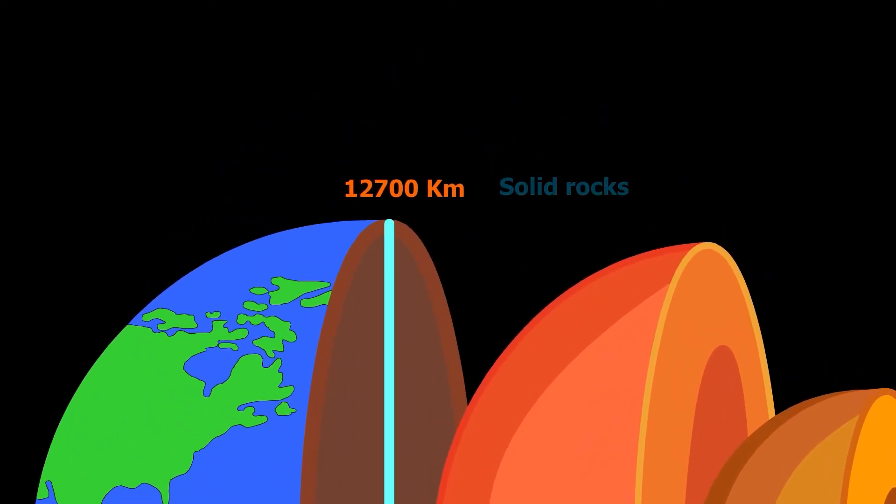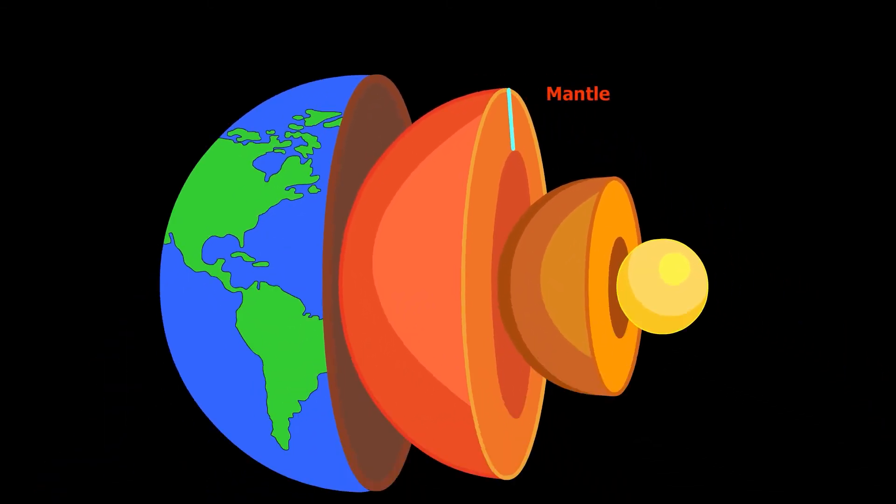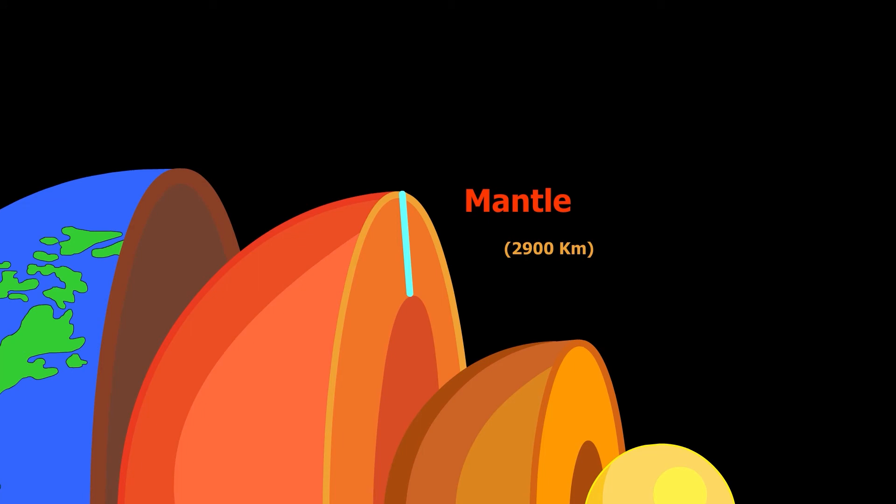It is primarily made up of solid rocks. Below the crust is the mantle, reaching to a depth of about 2,900 kilometers.